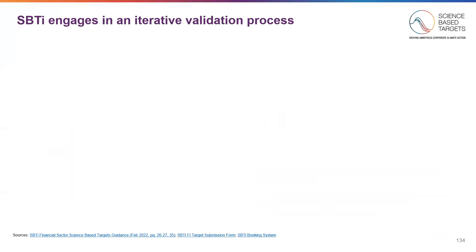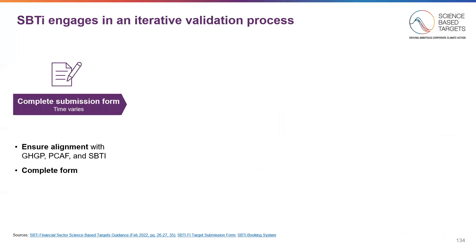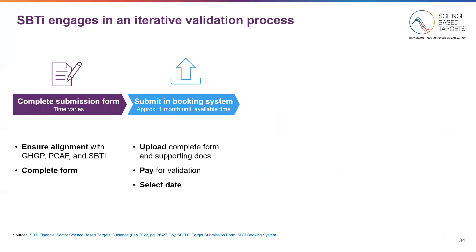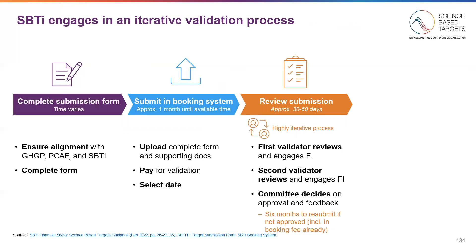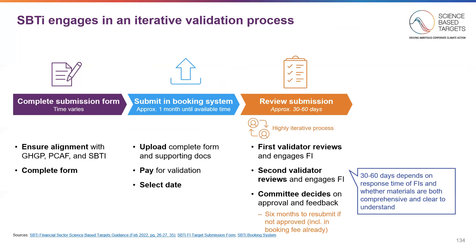The entire validation process is iterative. Financial institutions should expect to engage with SBTI throughout this process. First, FIs should complete the submission form, which we just overviewed. Second, FIs should submit via the SBTI booking system that can be found on SBTI's website — there's about a month timeline between submitting and the next available date. Third, FIs will undergo a review process with SBTI. There are two SBTI validators that review sequentially. This often requires engagement with the financial institutions and takes 30 to 60 days depending on the response time of the FIs and whether the materials were comprehensive and clear. Afterwards, the reviewers will take the decision to the committee for approval. If not approved, a financial institution has six months to submit again.